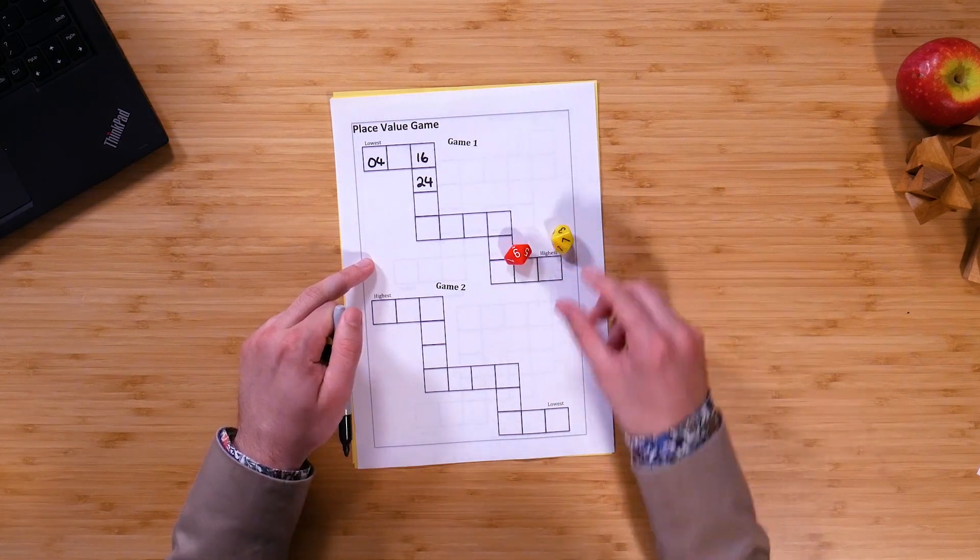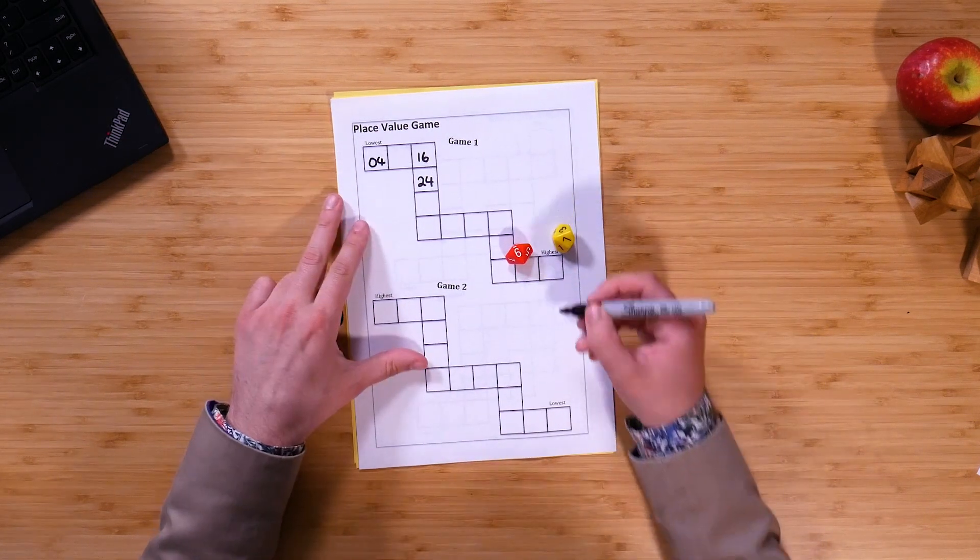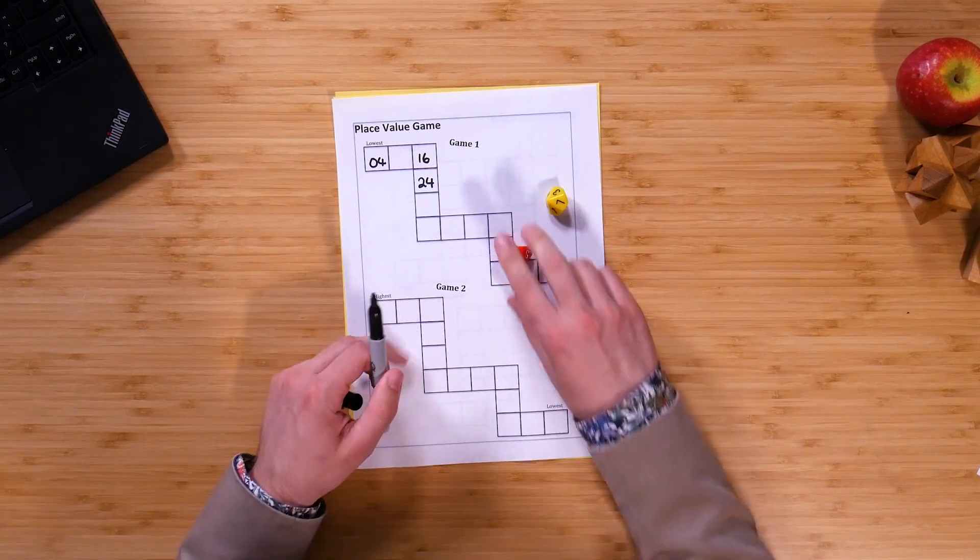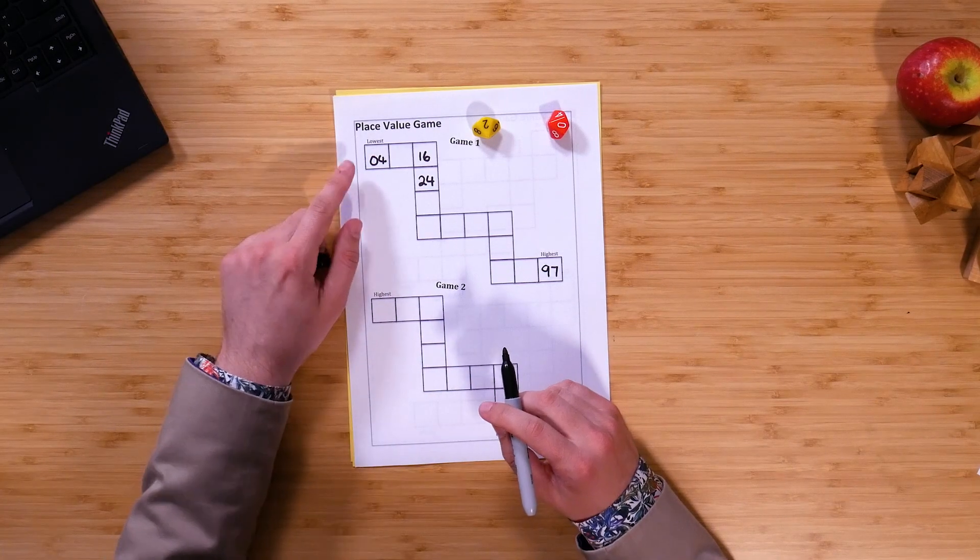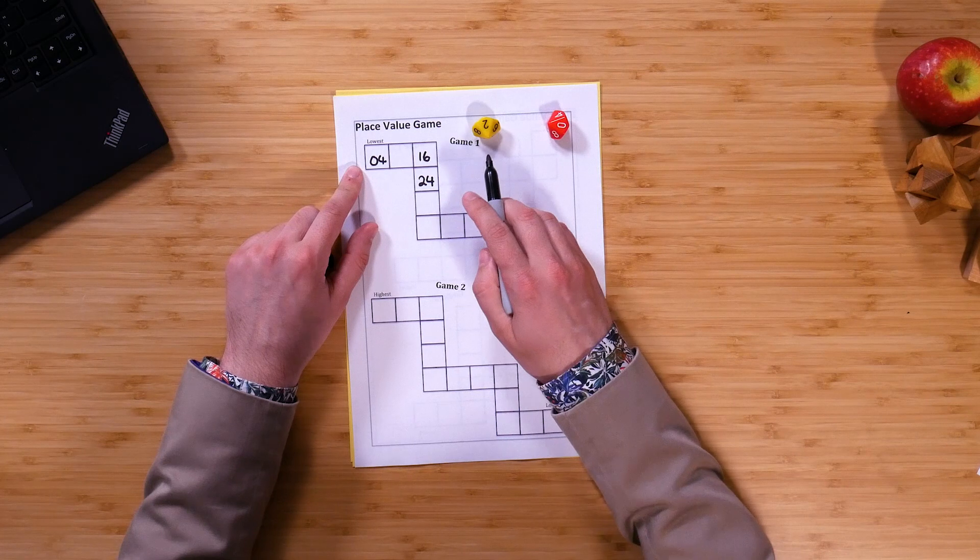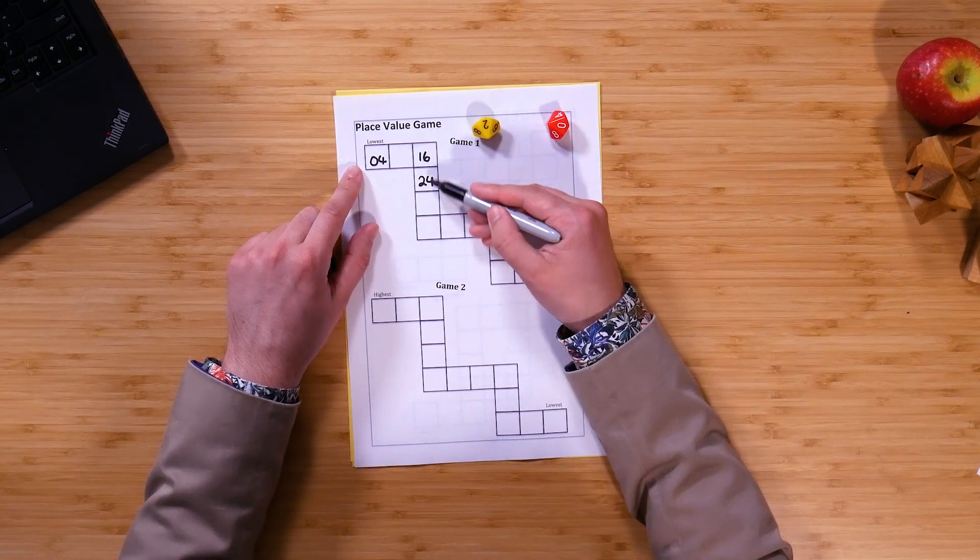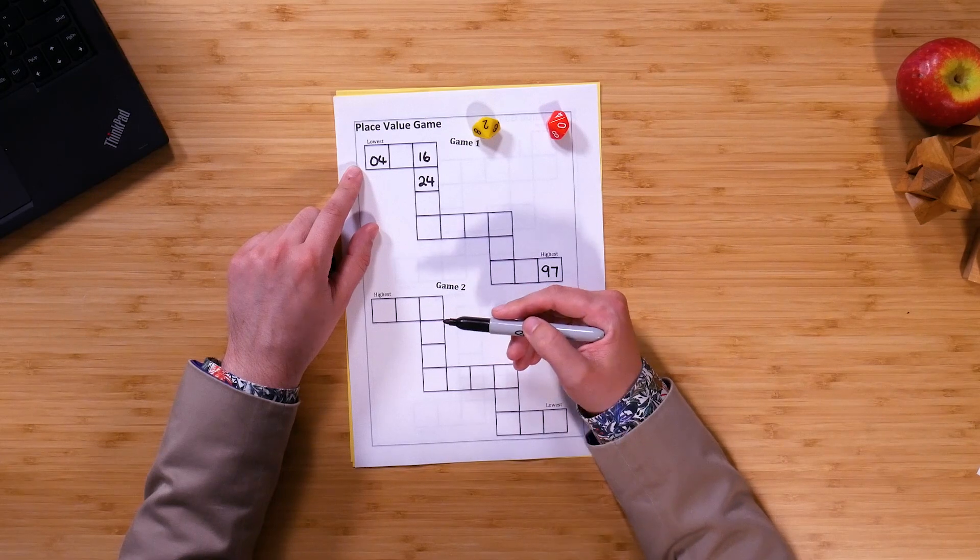You can see a 7 and a 9, well that's really good because that could be 97 and that could go in my highest one down here because I don't think I'm going to get anything higher than 97. I'll roll a 0 and a 2. Ah, well I couldn't put the 2 there because that's lower, but I can't put 20 either because there's no spaces in between, so that means I would actually have to miss a go.